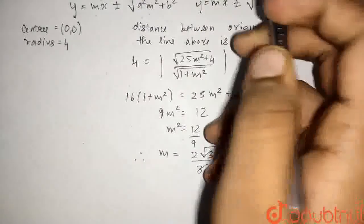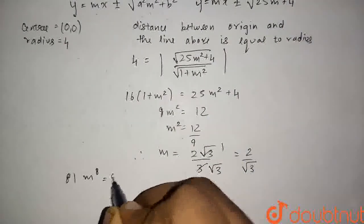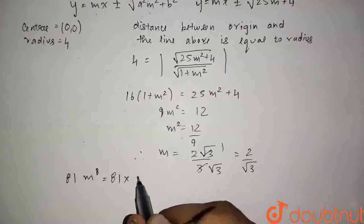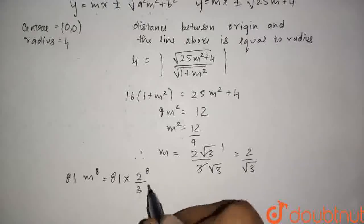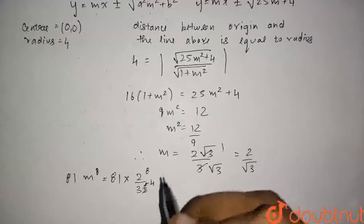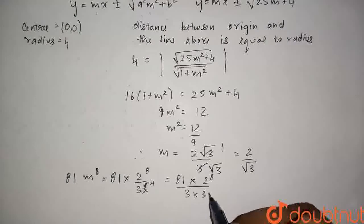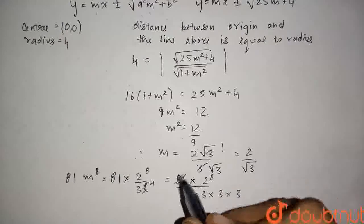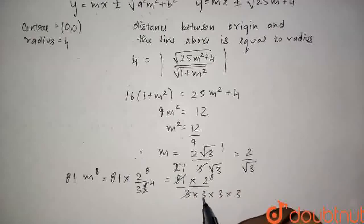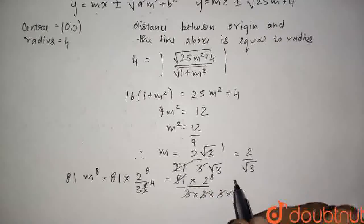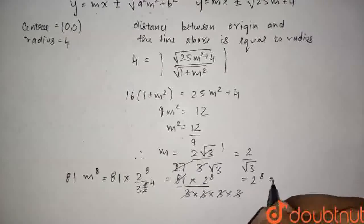We have to find 81 · m⁸. Substituting m = 2/√3, we get 81 · (2/√3)⁸ = 81 · 2⁸ / 3⁴. Since 3⁴ = 81, this simplifies to 2⁸ = 256. So the final answer is 256.